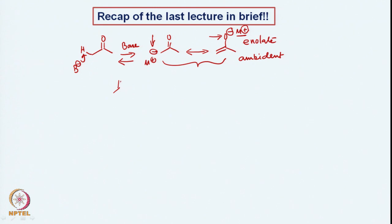We also discussed how putting an extra functional group here — for example an ester, sulfonyl, or nitro group — and then letting the reaction go with softer nucleophiles allows attack at carbon. Then we remove the functional group to get the C-alkylated product, so we have C-alkylation proceeding further.